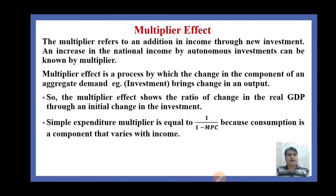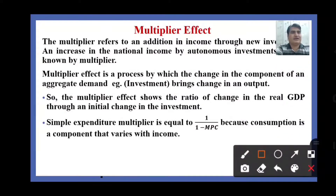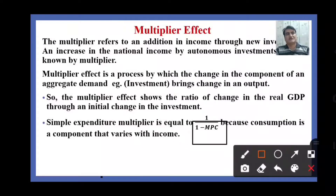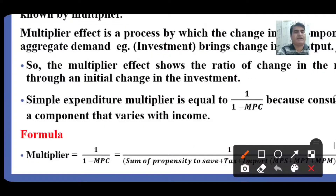The simple expenditure multiplier is equal to 1 over (1 minus the marginal propensity to consume), because consumption is a component that varies with income. The marginal propensity to consume means the proportion of additional income which is spent on the purchase of goods and services. The formula for multiplier effect is: 1 / (1 − MPC).